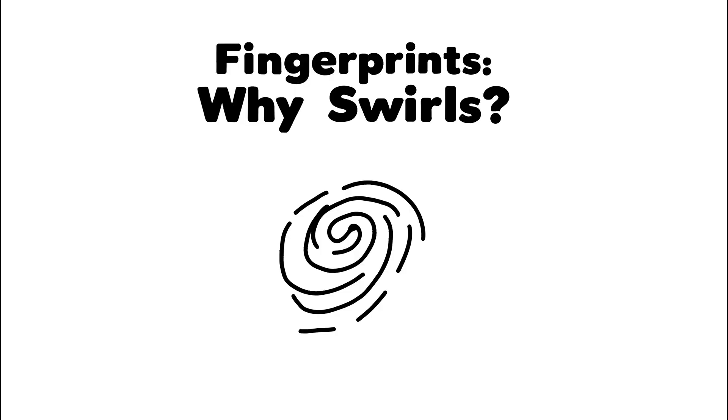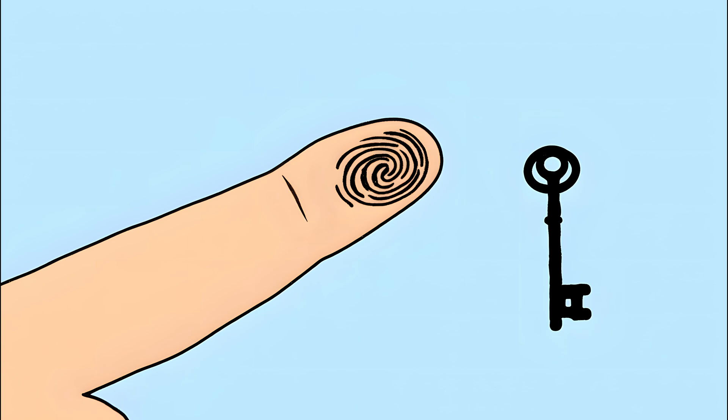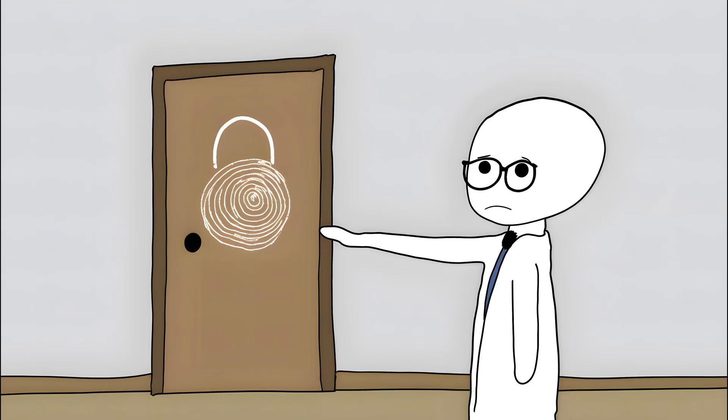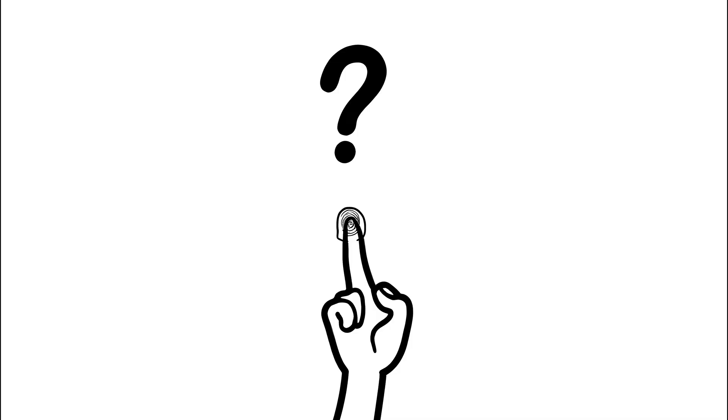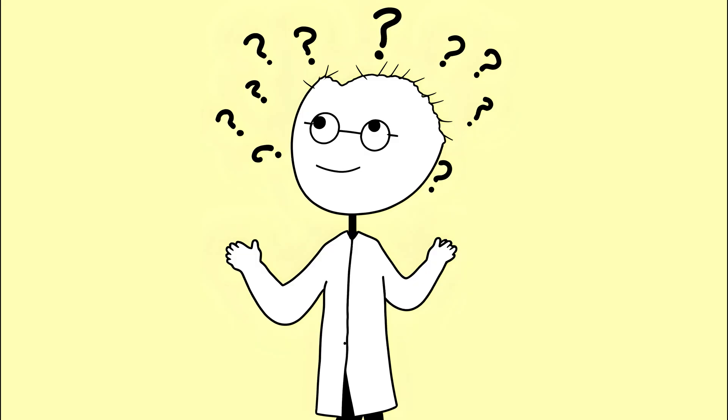On to number two. The purpose of fingerprints. Why the swirls? Your fingerprints are so unique. They're used as biometric keys to your entire life. But ask a scientist why you even have those ridges and swirls, and you'll get shrugs and guesses.